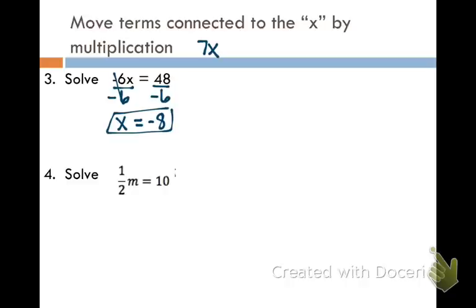With this next one, I have one half times m. So I'm going to divide both sides by a half. And if you don't like using a half, you can always use 0.5. But I'm going to divide both sides by a half. And if I put this in my calculator, ten divided by, use parentheses here, or your fraction button. Ten divided by one half. On the left side, I'm going to cancel out and just get m. On the right side, I will get twenty.